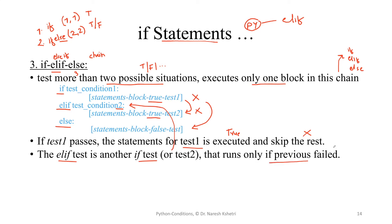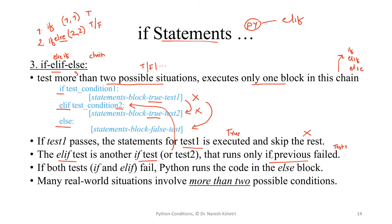So if the previous test fails means if the test one fails then only this runs. So if both tests the first and second fail then Python runs the code in the else block.